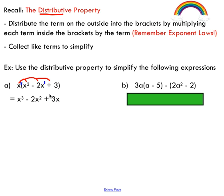Just a quick little example of the distributive property. The last thing you always want to do is check if you've got any like terms that you can collect. In this case, I do not have any like terms. Remember, like terms have the same variable and the same exponent. So here we've simplified our expression and we're good to go.